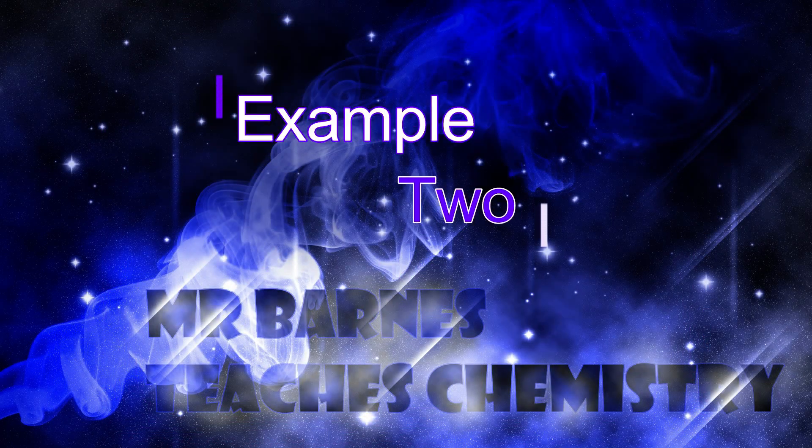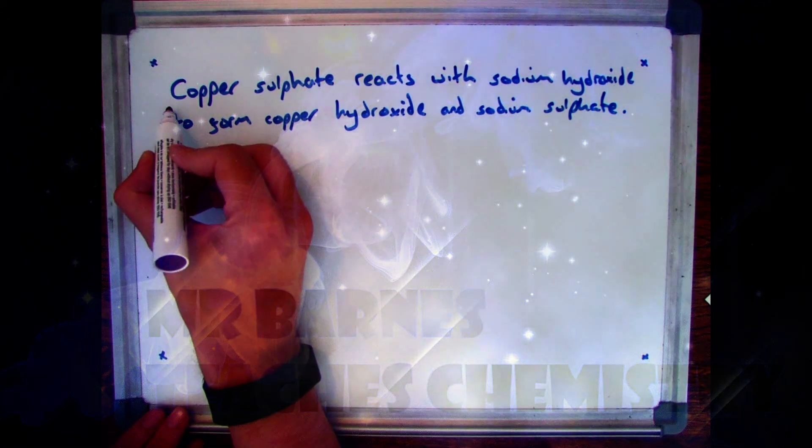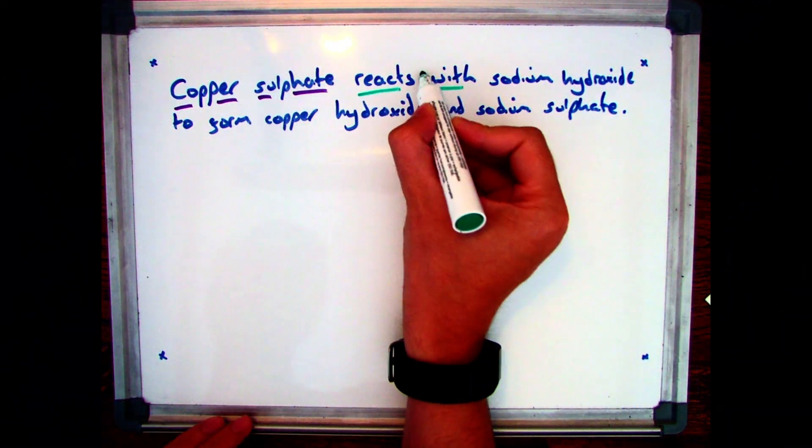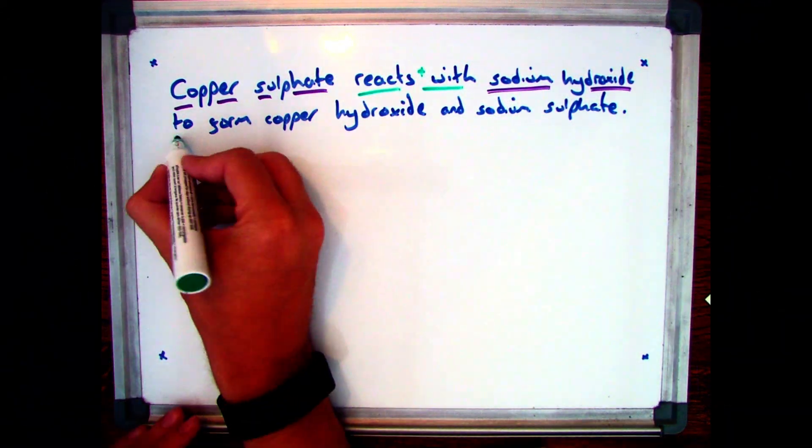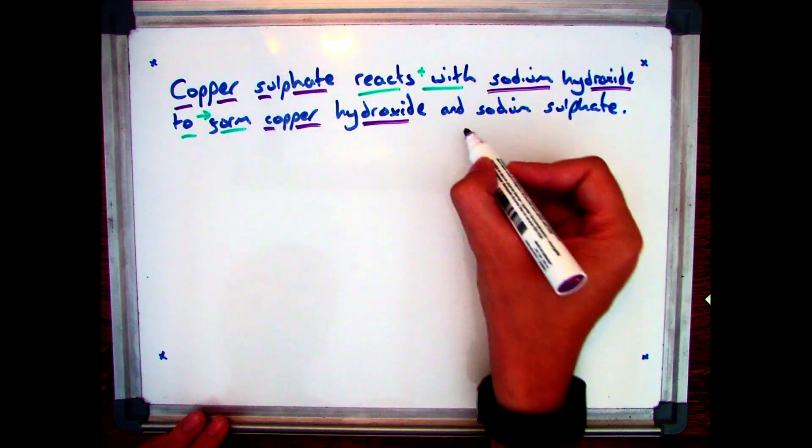Okay, let's have a look at a second example then. This one says copper sulfate reacts with sodium hydroxide to form copper hydroxide and sodium sulfate.